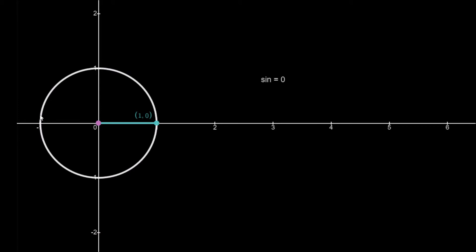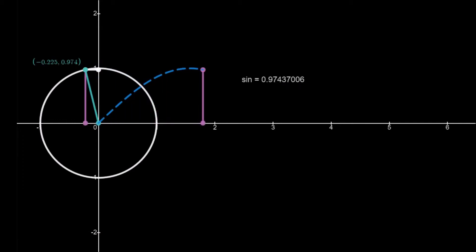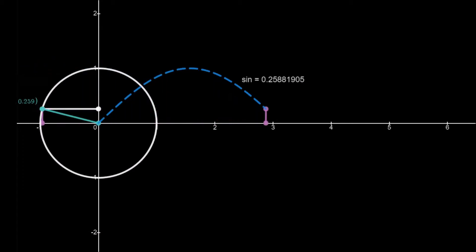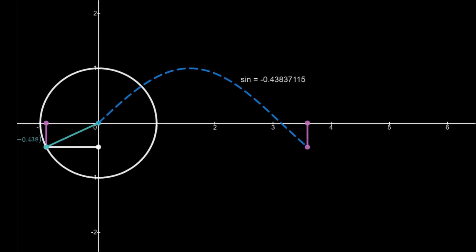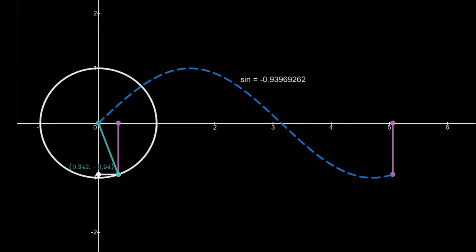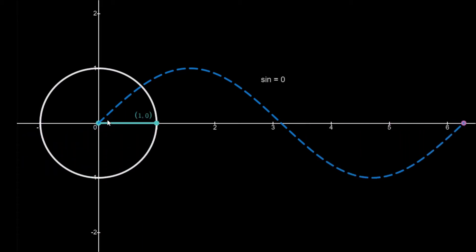As we move this blue dot around, we're going to generate the sine function. You'll see the sine function being generated here — it's the blue dotted line. So this is our sine function.